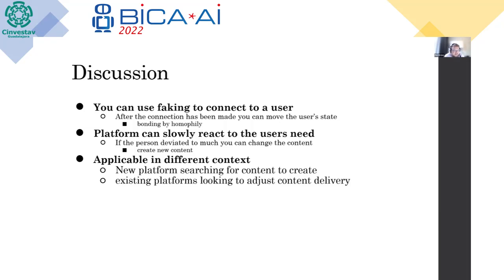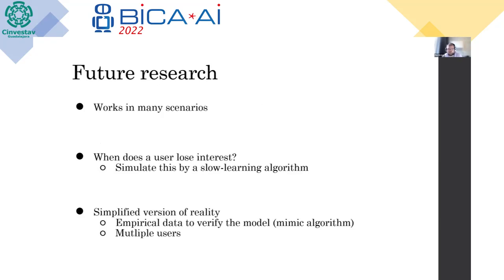And it's applicable in different types of contexts. So for instance, you could use this model for a new platform searching what type of content it would create, or for existing platforms looking to adjust their content delivery. It is also important to mention that we threw a couple of scenarios at the model, and it always seemed to work in the sense that the fake state of the platform, so the algorithm, quickly matches the user and then is able to move the user.